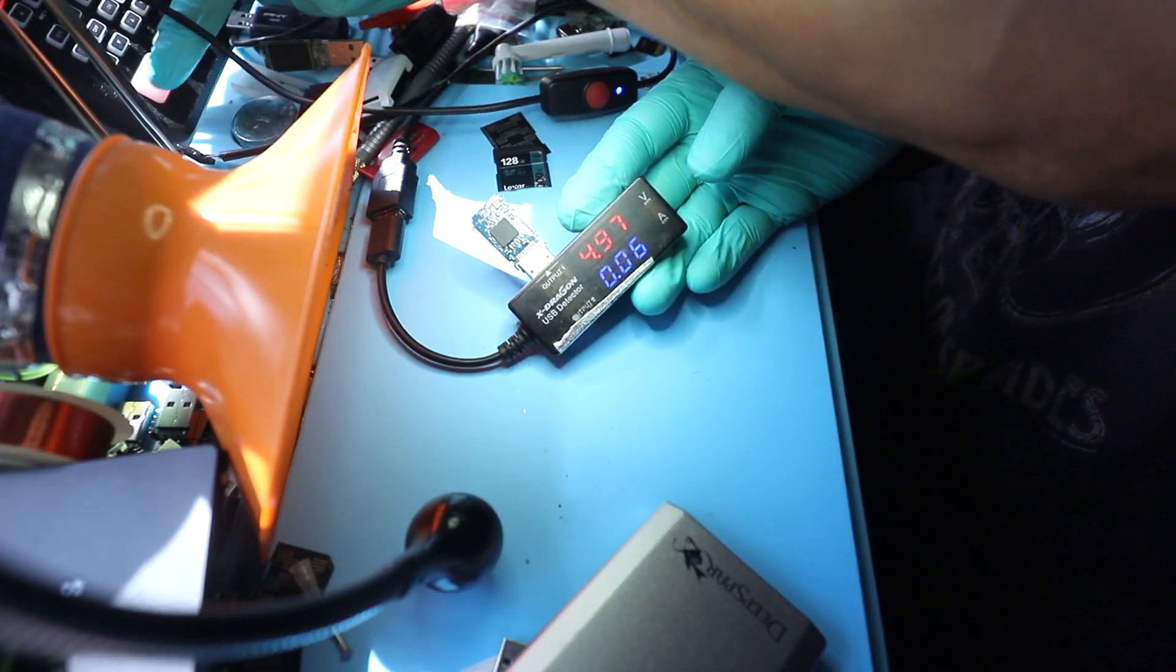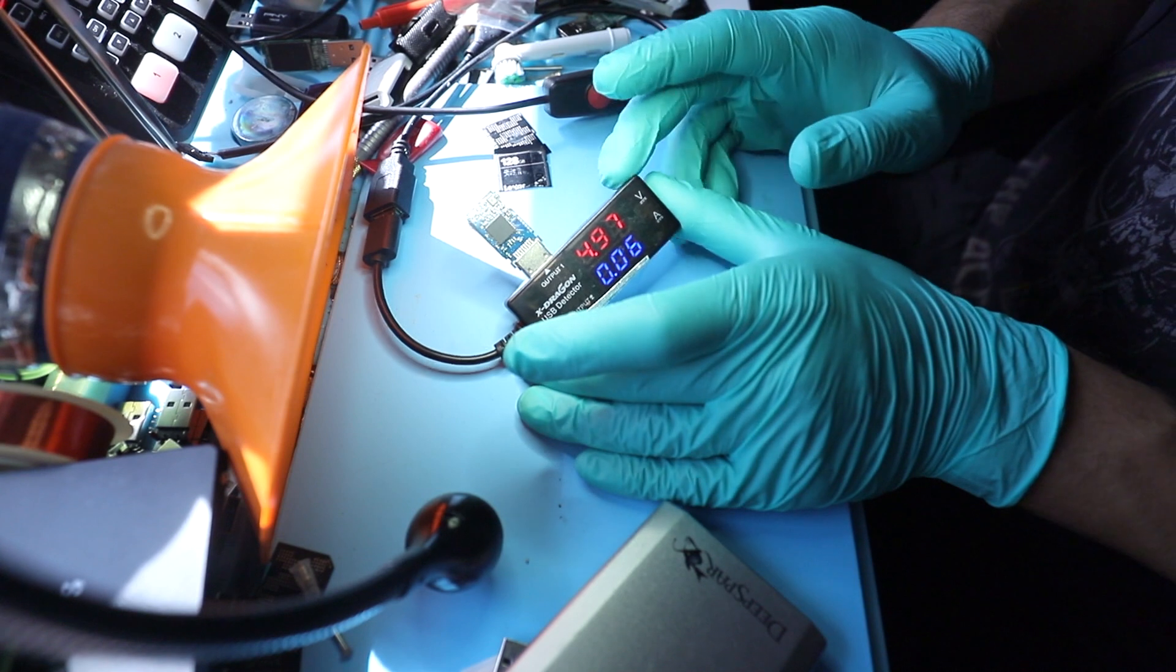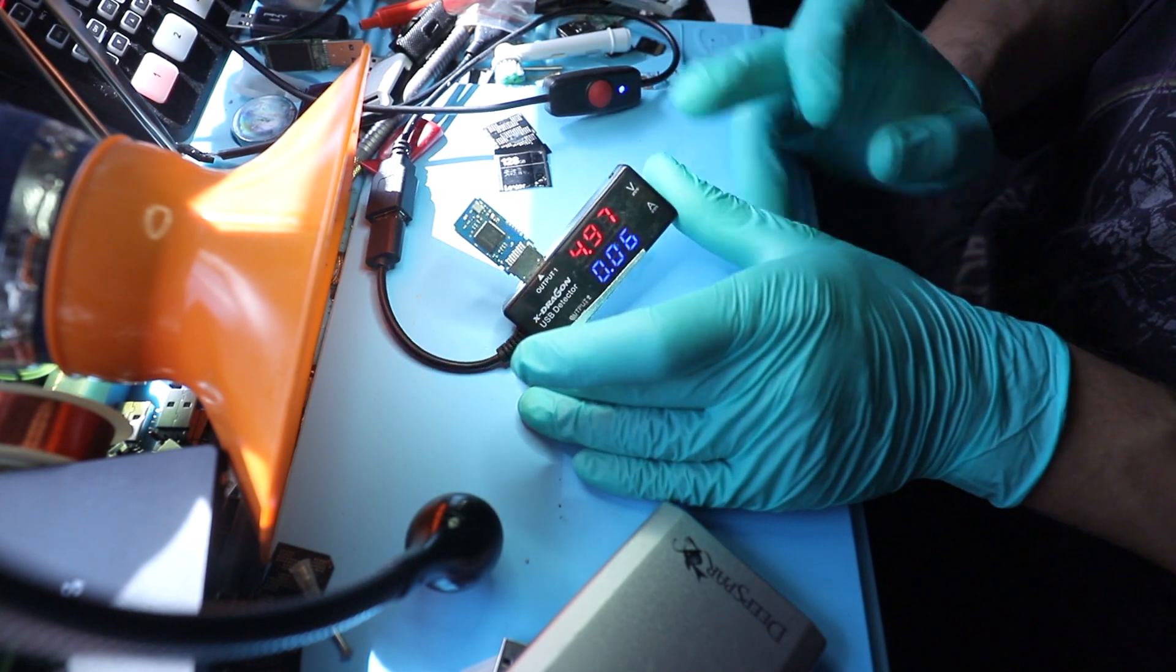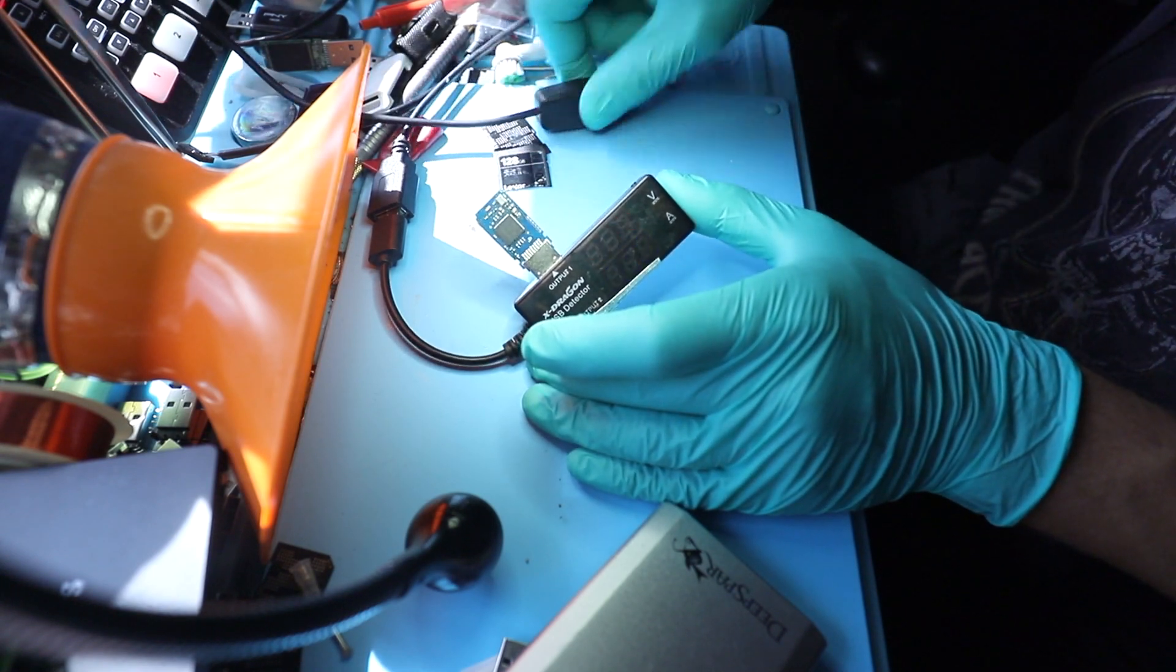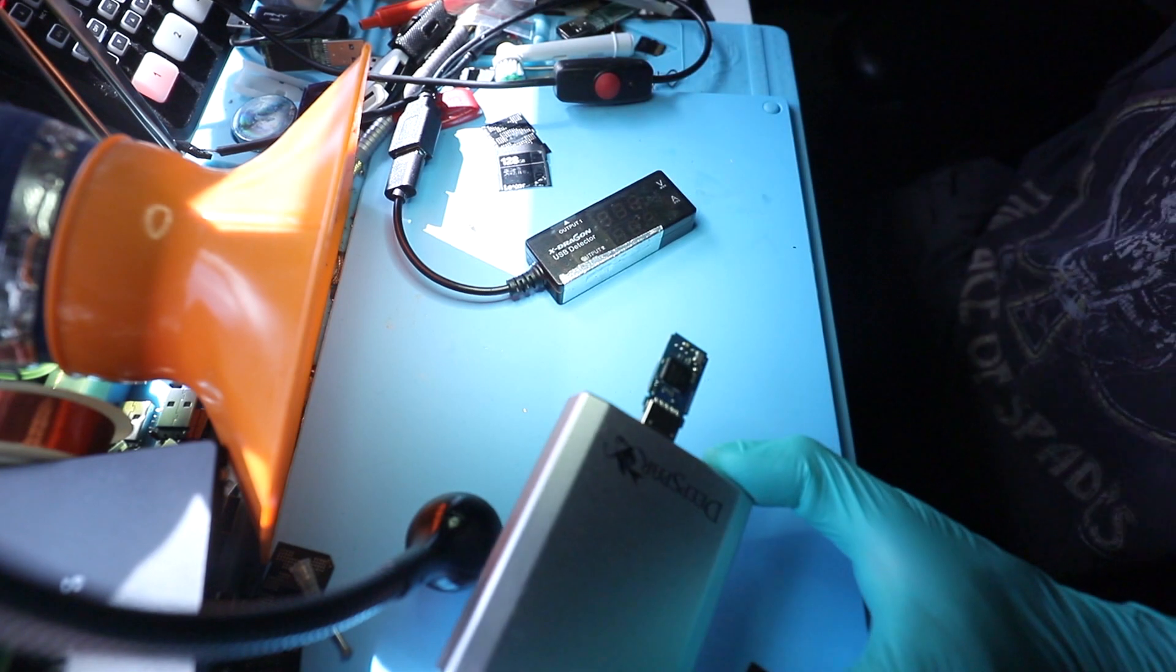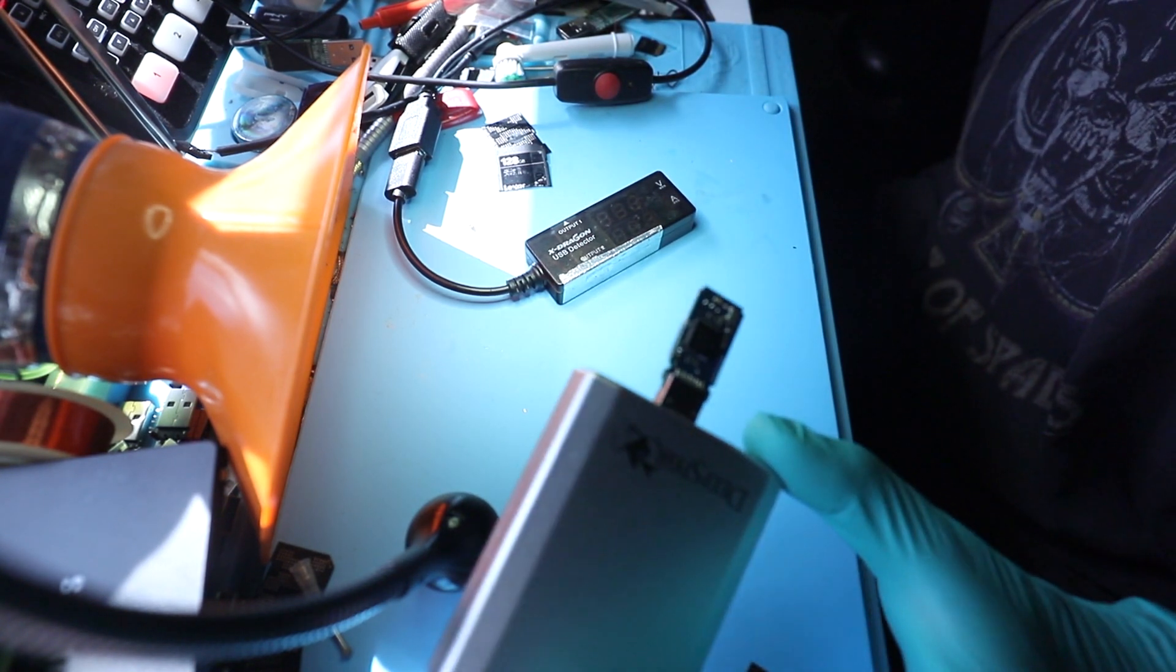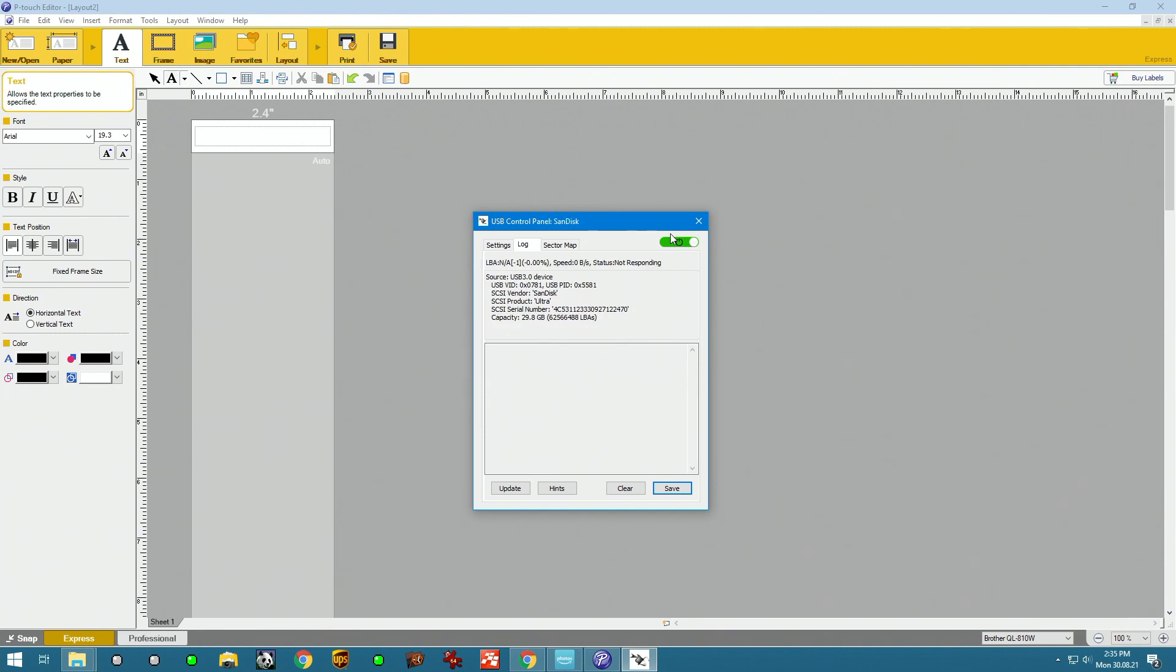All right, so that piece actually needed to be in place. We're getting 0.06 on the read. And now if we turn it off and plug it in here and power it on, we're getting 28 gigs capacity SanDisk Ultra. Our device is linked.